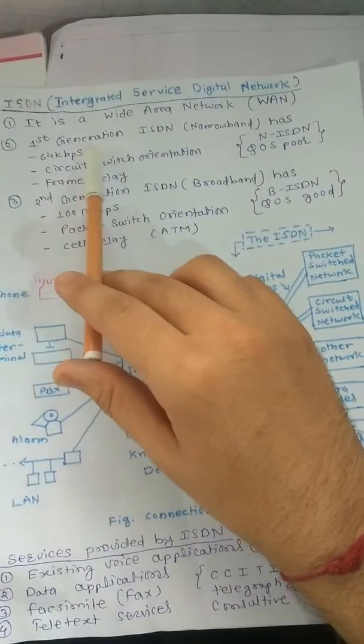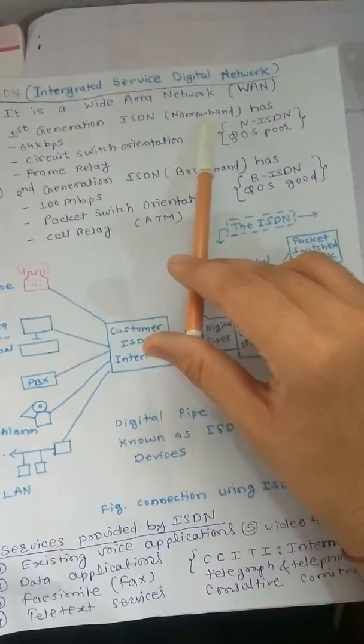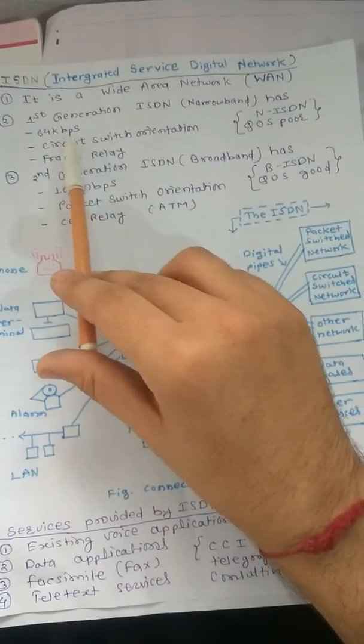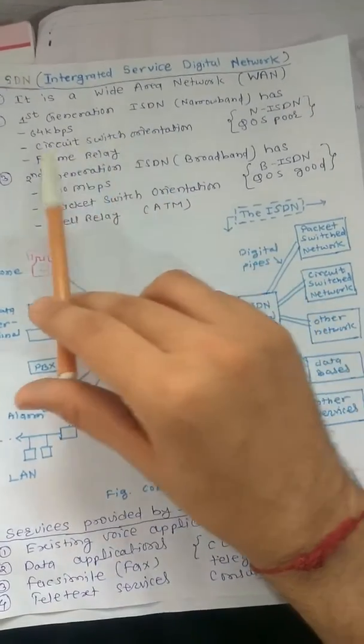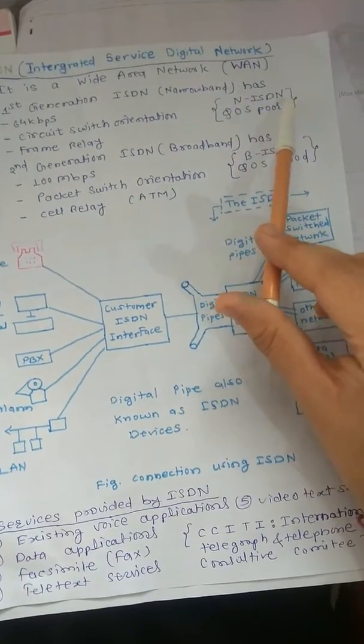ISDN is divided into two generations. The first generation ISDN is narrowband and has these features: 64 kbps, circuit switching orientation, and frame relay. In simple words, it's also known as NISDN. Quality of service is poor.